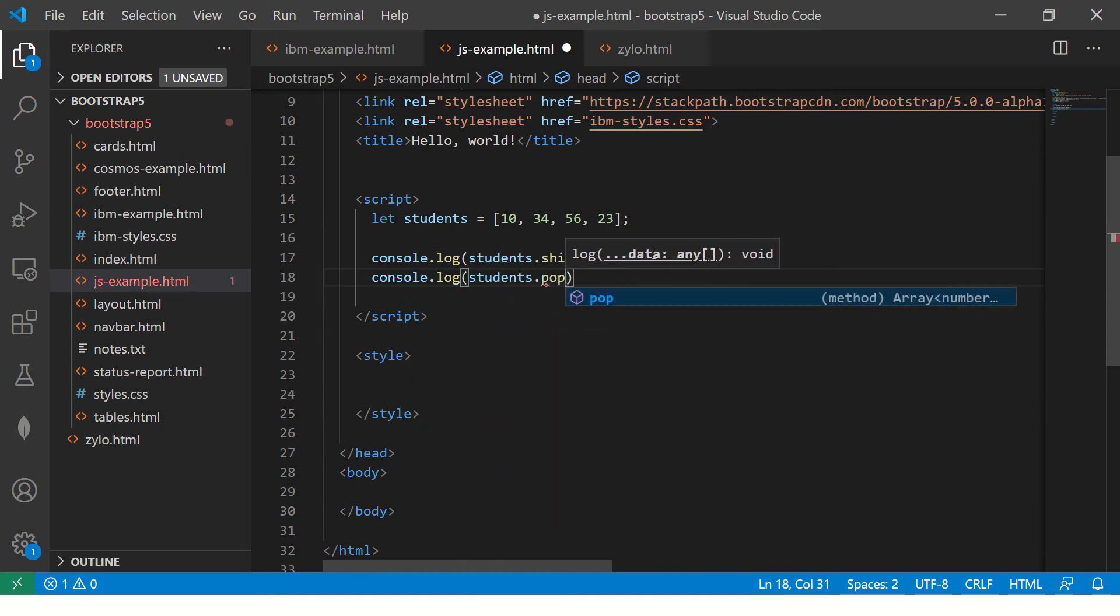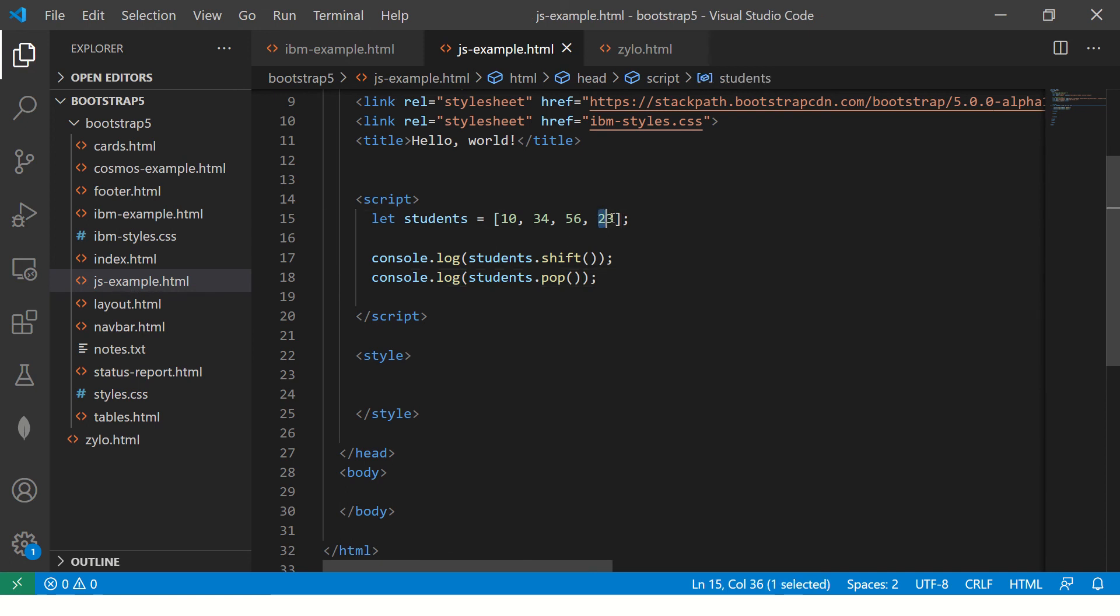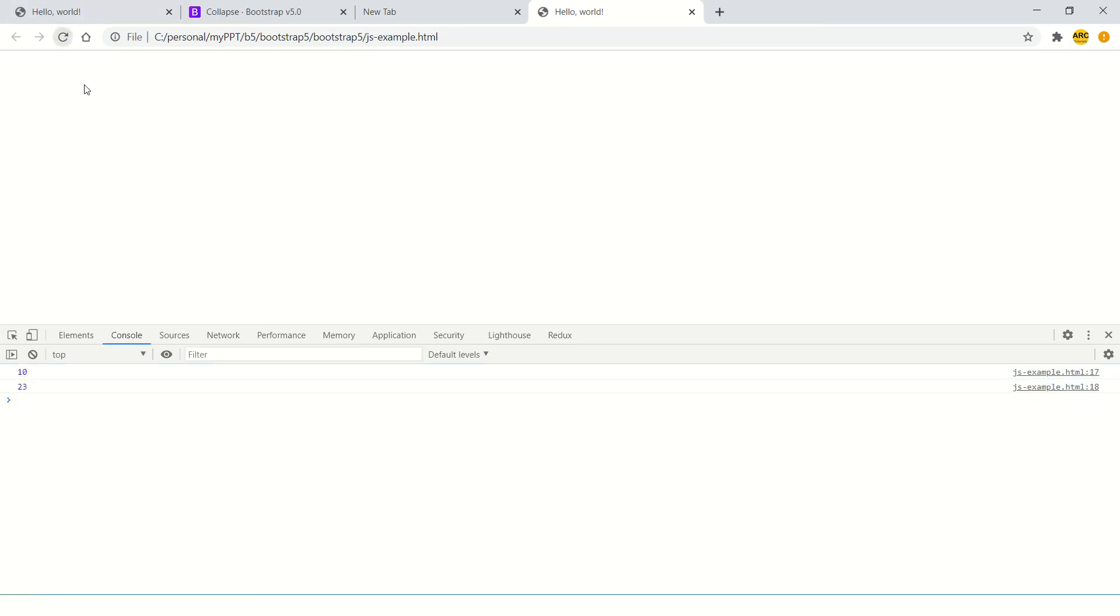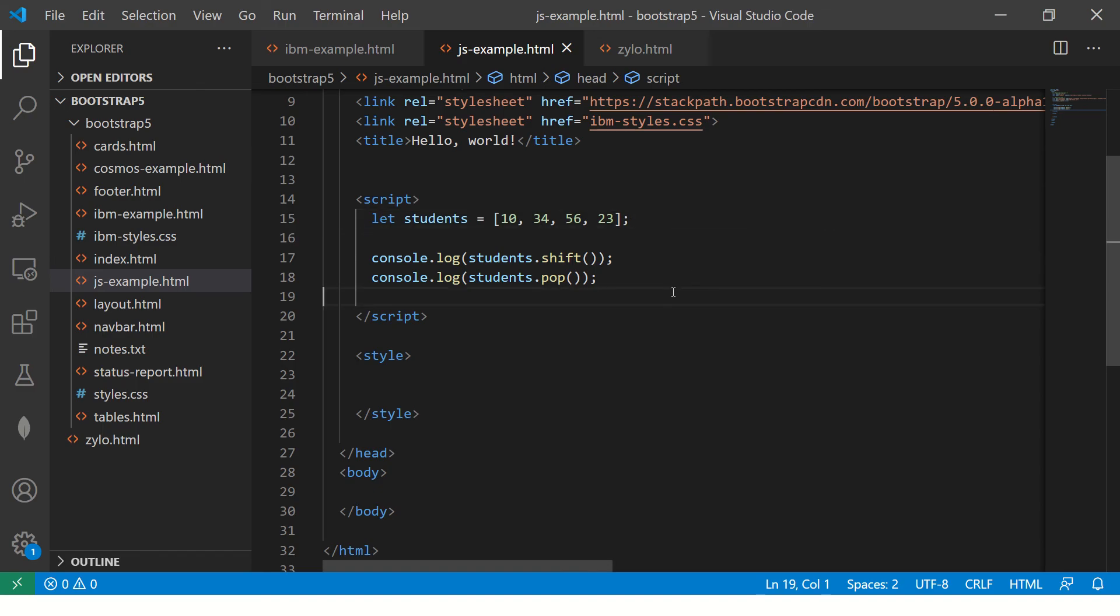what happens? It will remove the last element which is 23. So our expected output in this case is 10 and 23. I hope these array methods are clear to you because these are mostly asked questions in your interview.